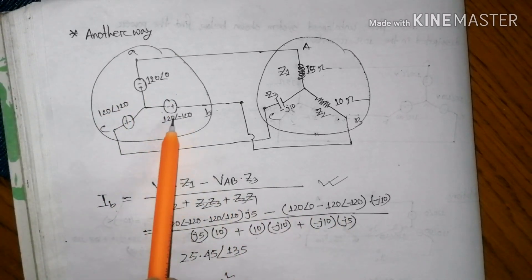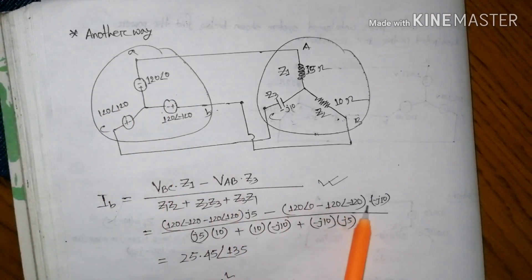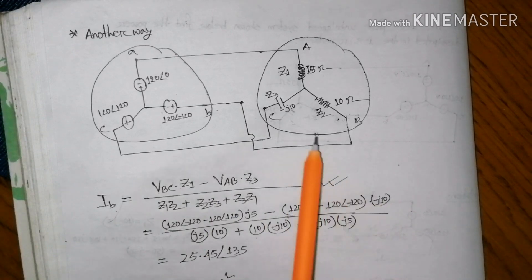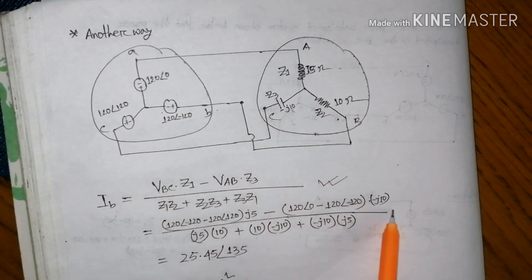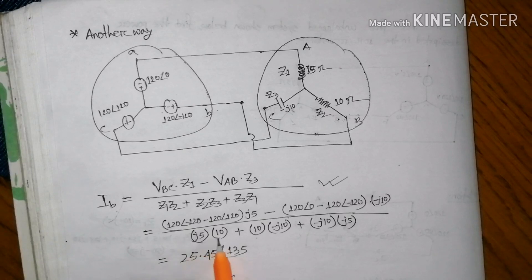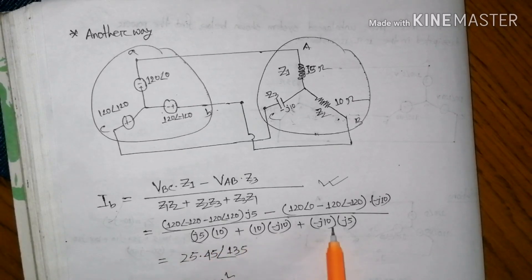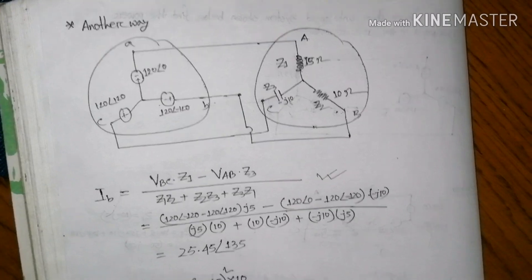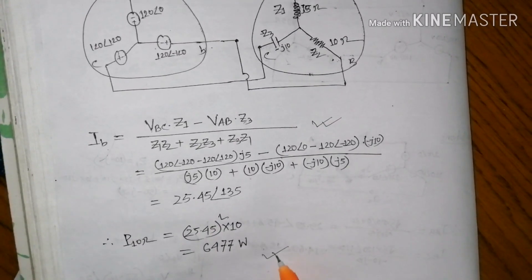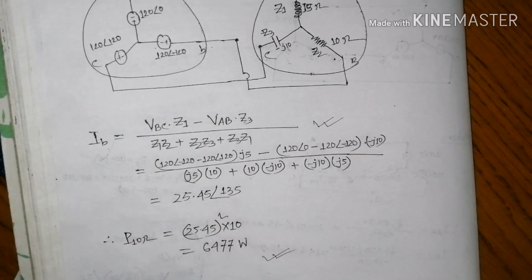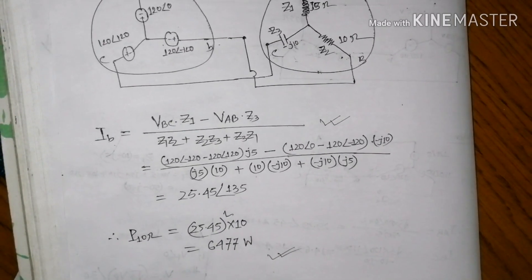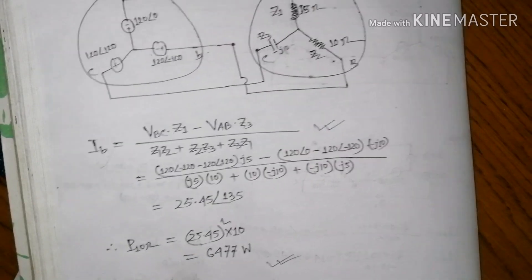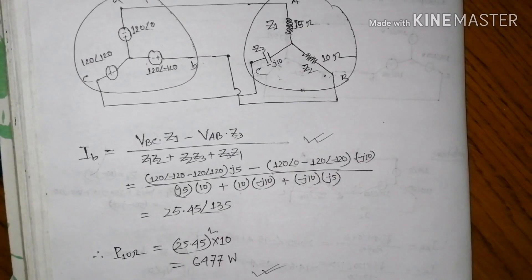With Z3 minus Z of 10, if we calculate Z1, Z2, Z3 — the Z1, Z2, Z3 calculation — we get the same result. So if we understand this, it is the unbalanced load, which is straightforward.